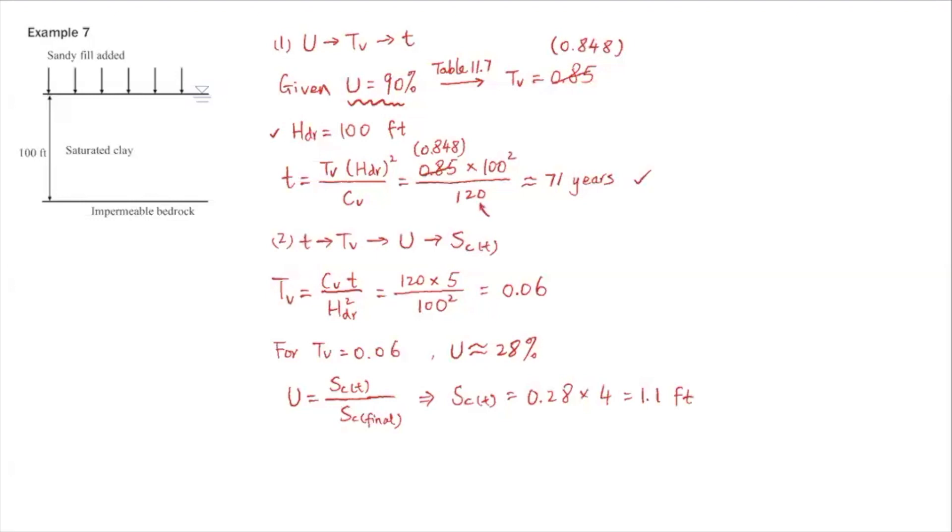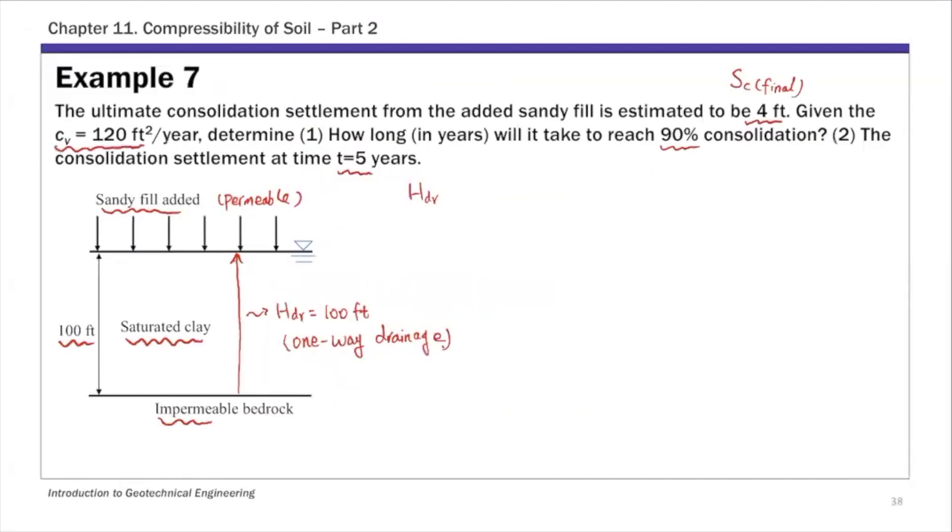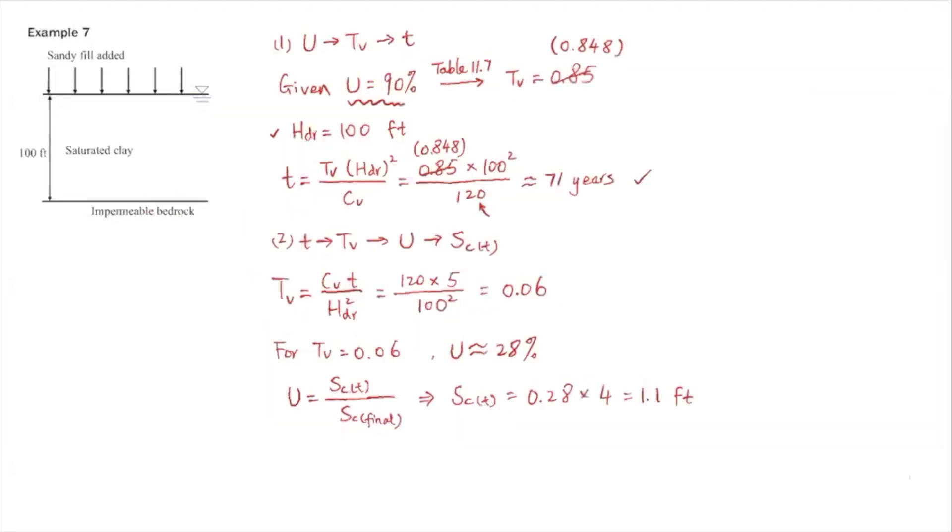This cv of 120 feet squared per year is given in the problem statement. So that's part one of this problem: 71 years.